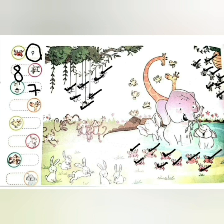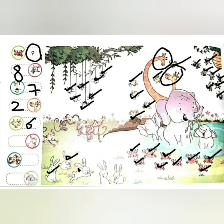How many giraffes are there in the picture? Let's count. 1, 2, 3, 4, 5, 6. How many birds are there in the picture? Let's count. 1, 2, 3, 4, 5, 6. There are 6 birds. How many rabbits are there in the picture? Let's count. 1, 2, 3, 4, 5. There are 5 rabbits.